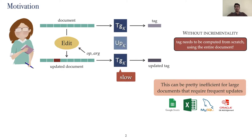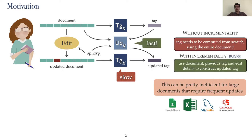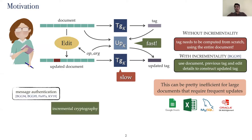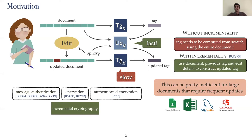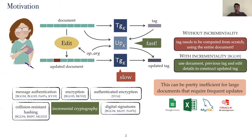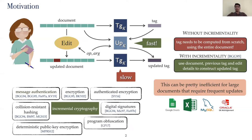Instead, we could use the property of incrementality, first introduced in 1995 by Bellare, Goldreich, and Goldwasser, to use the tag of the unedited document, the document, and the editing details to generate an updated tag much faster than computing the tag from scratch. Incrementality has already been studied for different areas of cryptography, such as message authentication, authenticated encryption, collision-resistant hashing, digital signatures, deterministic public key encryption, and even program obfuscation. One basic area in which it has not been studied, however, is pseudorandom functions. We bridge this gap in our work.